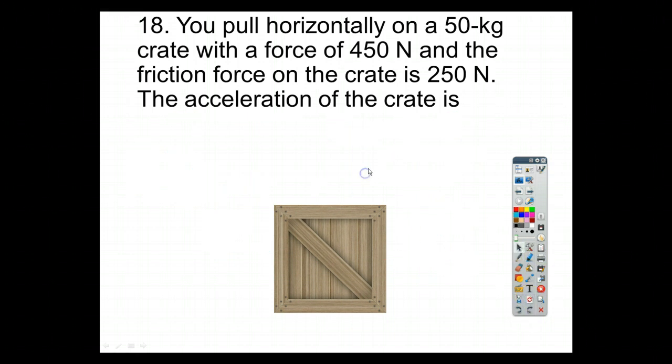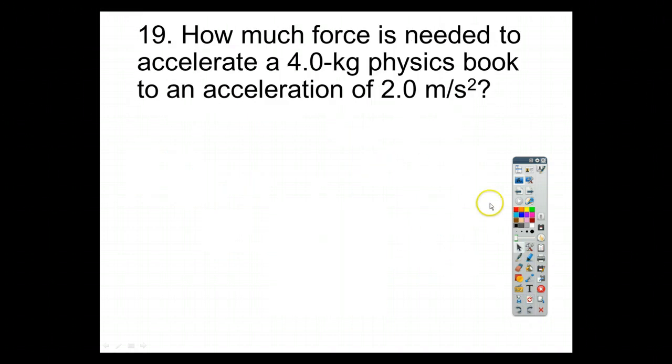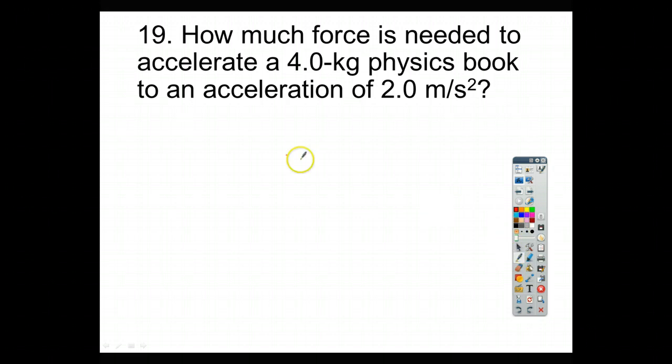For number 19, it says how much force is needed to accelerate a 4 kg physics book to an acceleration of 2 m per second squared, so this one's really easy. We just take 4 times 2, and we end up with, for number 19, 8 newtons.